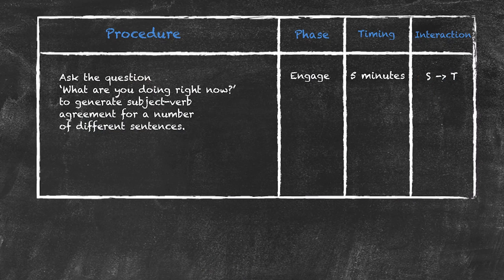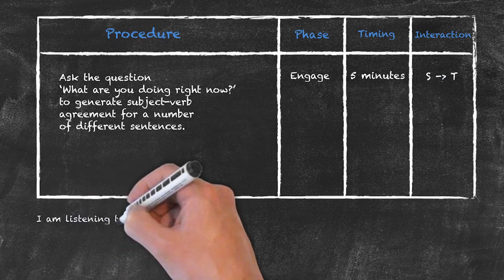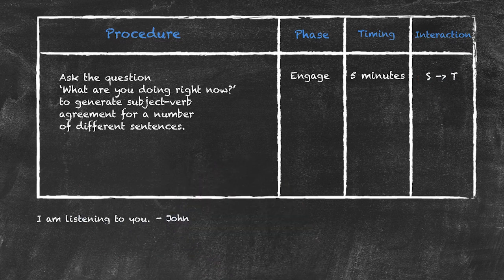So, to cut away from that, if we imagine that we went around the class asking various people, What are you doing right now? Then we may generate some sentences that could possibly look like this. So John says, I am listening to you. Kate says, I am sitting.